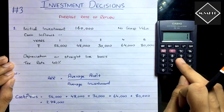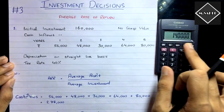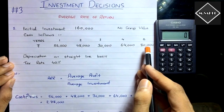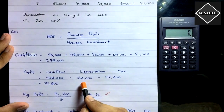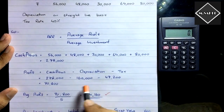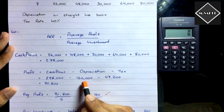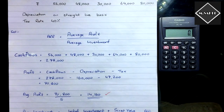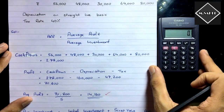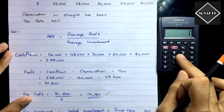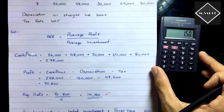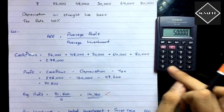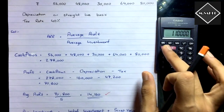To summarise the depreciation rule: if there is scrap value, subtract it from the initial investment to get total depreciation. For example, if scrap value is 10,000 then depreciation = 1,60,000 − 10,000 = 1,50,000; if scrap value is 50,000 then depreciation = 1,10,000. Here, with no scrap value, total depreciation = 1,60,000.